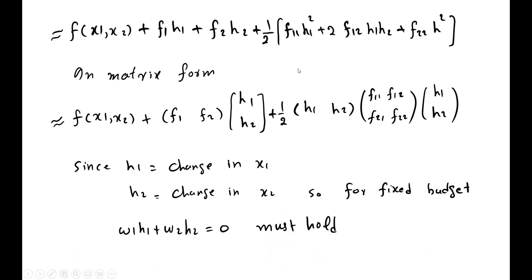In simplified notation, the Taylor series expansion uses f1 for the first order derivative with respect to x1, f2 for the first derivative with respect to x2, the second order own derivative with respect to x1, the second order own derivative with respect to x2, and the second order cross partial derivative times h1·h2. The Taylor series expansion can also be reported in matrix form as f(x1, x2) plus the multiplication of three different matrices — if you multiply these three matrices you get those terms.